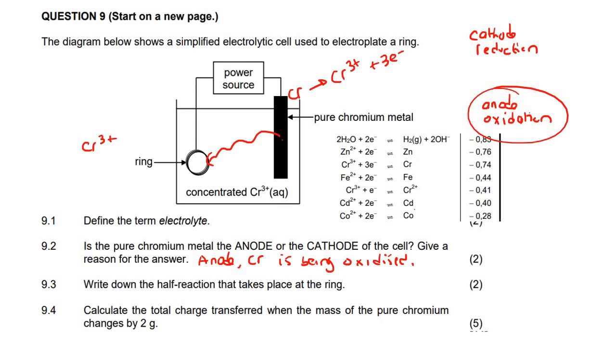So now we're just going to write it the normal way going forward. So it's going to be Cr³⁺ + 3e⁻ gives you Cr. That's the half reaction.